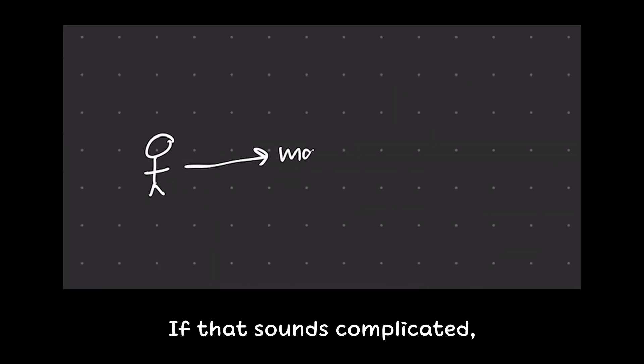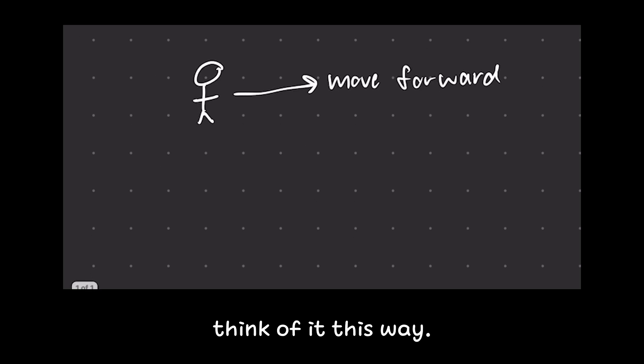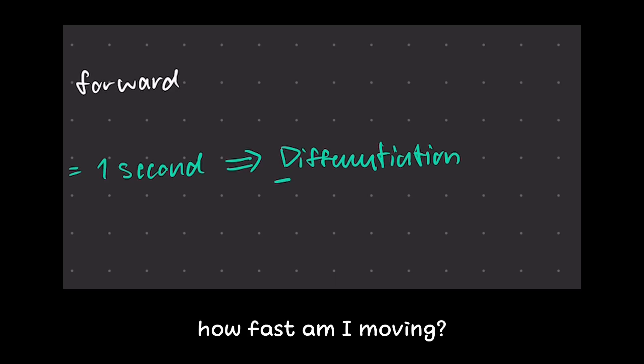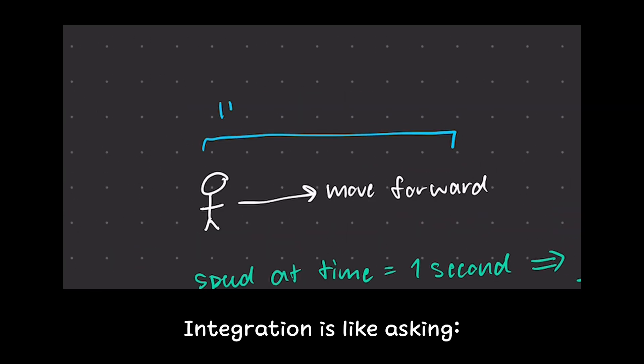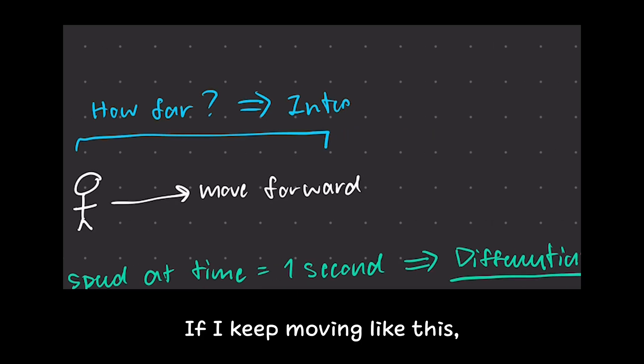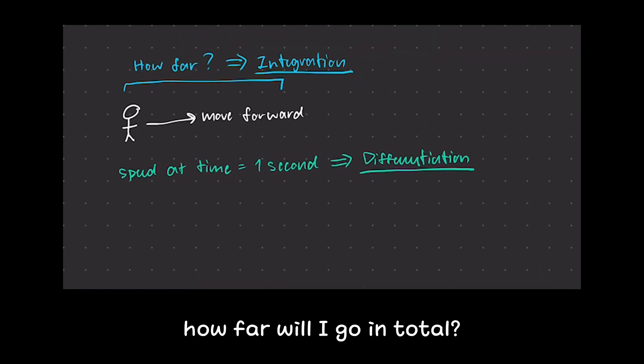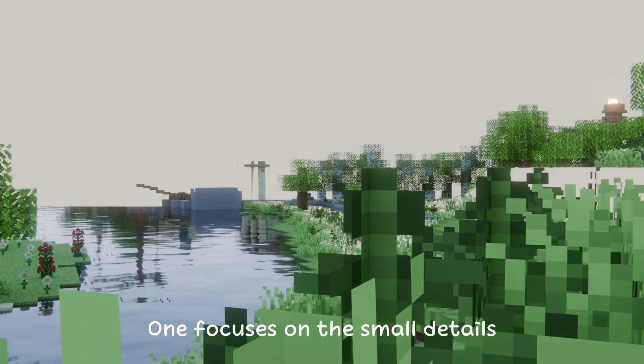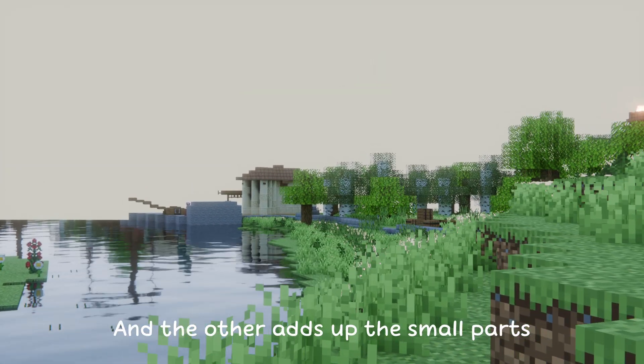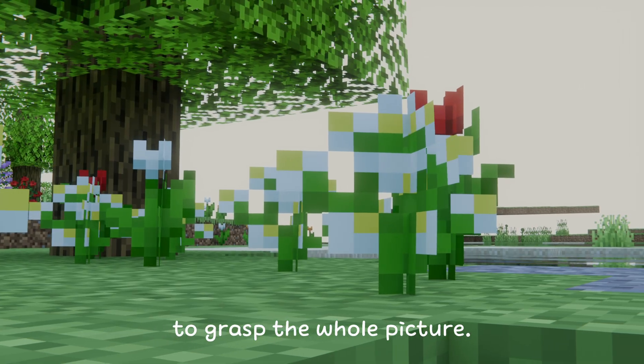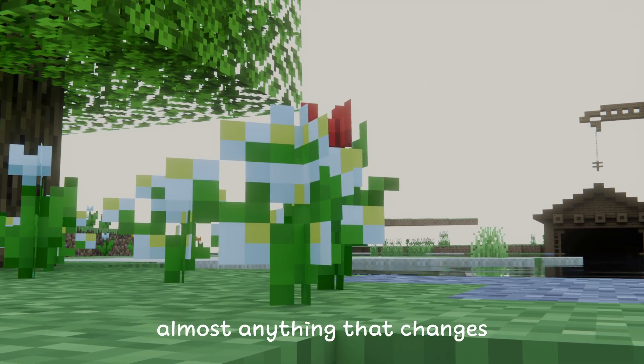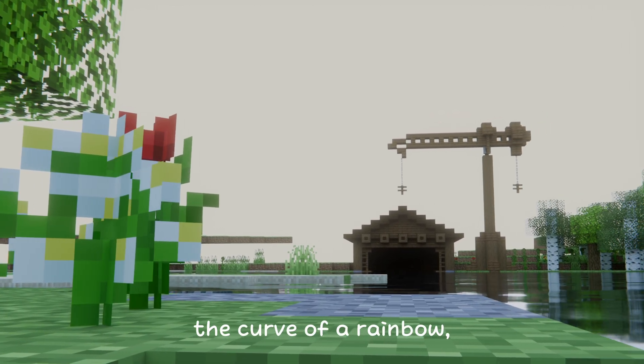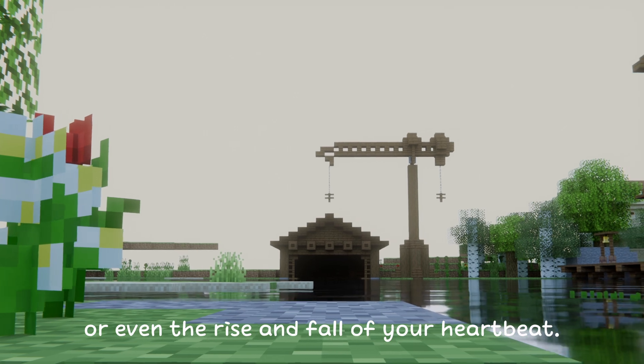If that sounds complicated, think of it this way. Differentiation is like asking, at this very moment, how fast am I moving? Integration is like asking, if I keep moving like this, how far will I go in total? They are opposites, but also partners. One focuses on the small details to understand the moment, and the other adds up the small parts to grasp the whole picture. Together, they help us describe almost anything that changes. The speed of falling stars, the curve of a rainbow, or even the rise and fall of your heartbeats.